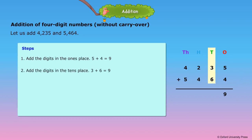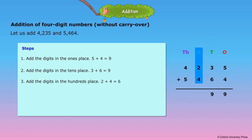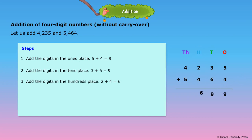Step 2: Add the digits in the tens place. 3 plus 6 is equal to 9. Step 3: Add the digits in the hundreds place. 2 plus 4 is equal to 6.